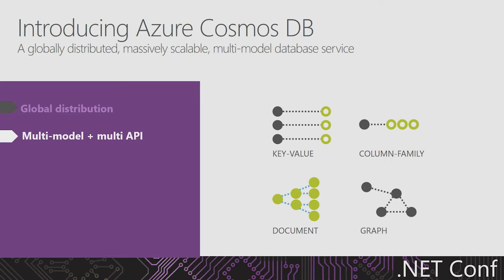Another aspect of Cosmos DB is the choice of API for developers. You can program with the API of your choice and still get all platform capabilities like global distribution. Key advantages: if you have different applications needing a key-value store, document store, or graph store, in the past you had to deploy them on different databases and manage them separately. Cosmos DB provides the same platform capabilities and manageability across any API. You can insert data using the document API and perform graph traversals on the same data — it's a true multi-model API.